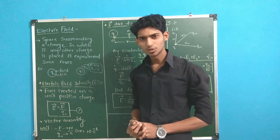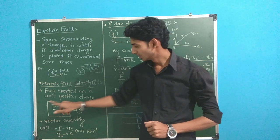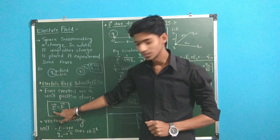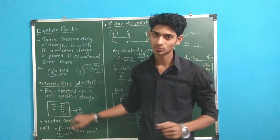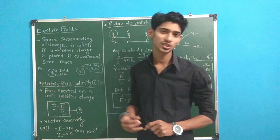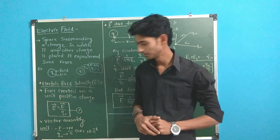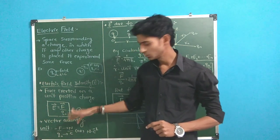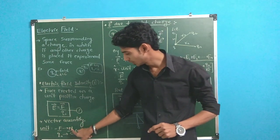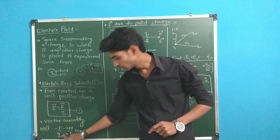Now, intensity is a vector quantity because it requires direction. If you look at the formula, force is there, force is the vector quantity. Charge is the scalar quantity because charge is only having a magnitude. The direction is not required. If you have a unit, force is the unit of newton, charge is the unit of coulomb.